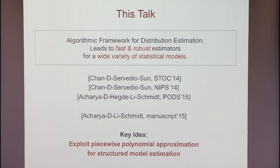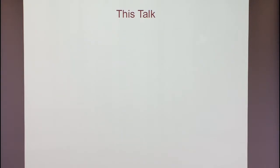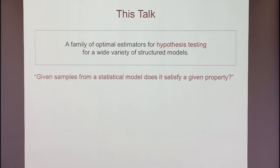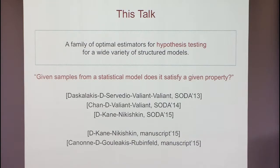These results are about learning distributions — doing density estimation from IID samples. The idea of piecewise polynomial approximation is powerful enough that it can be applied to other settings as well, in particular to hypothesis testing. Greg talked about these types of problems earlier today. The standard question in this setting is: given samples from a distribution, does it have a certain global property?